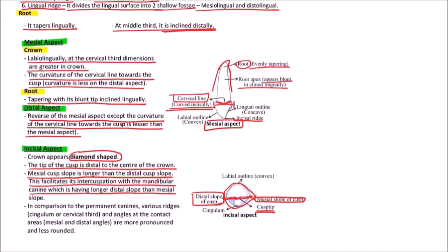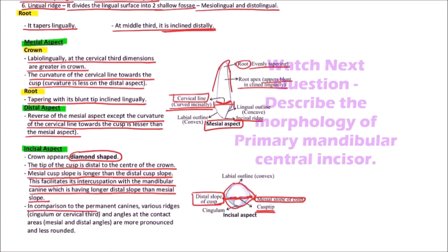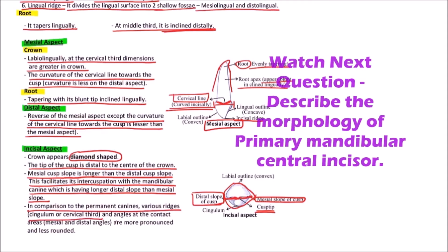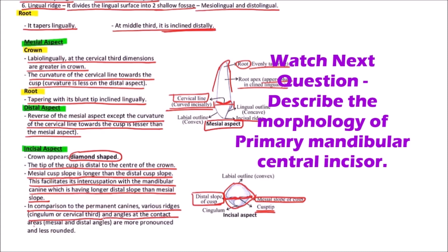This facilitates its intercuspation with the mandibular canine, which has longer distal slope than mesial slope, so it is reversed in the mandibular canine. In comparison to the permanent canines, various ridges like cingulum on cervical third and the angles at the contact area—mesial and distal angles—are more pronounced and less rounded.